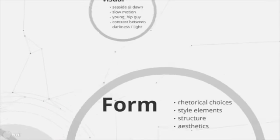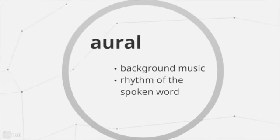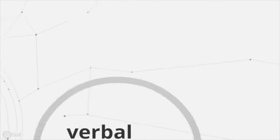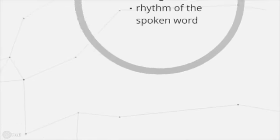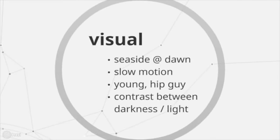Well, as a video, we know that we really have three possibilities. We have the visual, the aural, or what you hear, and the verbal, as in the language of the video. So, when we think about the rhetorical choices, the style elements, the form, visually, we see a few things.